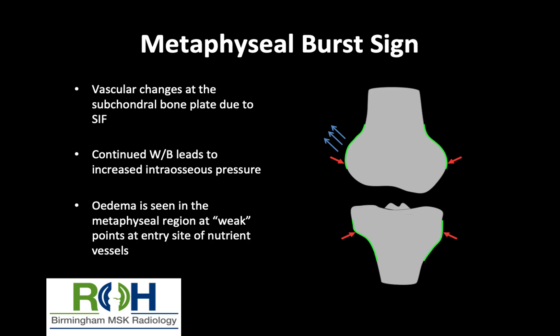What we describe is what we call the metaphysis burst sign. The soft tissue edema in relation to the metaphysis of the distal femur or proximal tibia is described as the metaphysis burst sign. If you look at the anatomy, the genicular arteries pierce through this region of the metaphysis and supply the femoral and tibial condyles. In patients with subcondylar insufficiency fracture, there is increased intraosseous pressure, and as a result there is increased vascular pressure of these vessels, resulting in seepage of fluid from the vessels into the adjacent soft tissues. Since the entry point is at that level, there is edema of the soft tissues in the metaphysis.